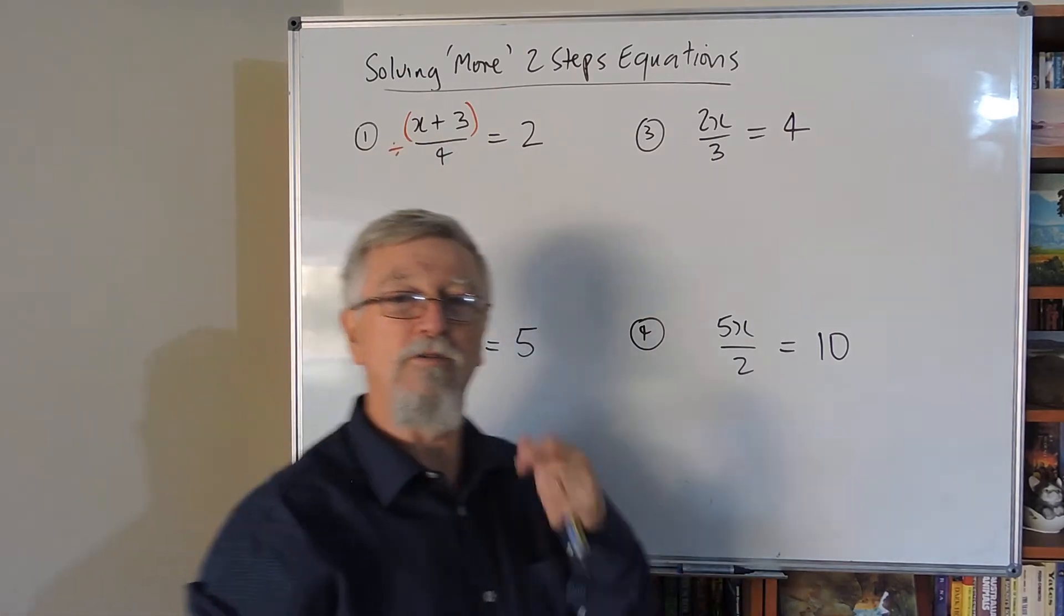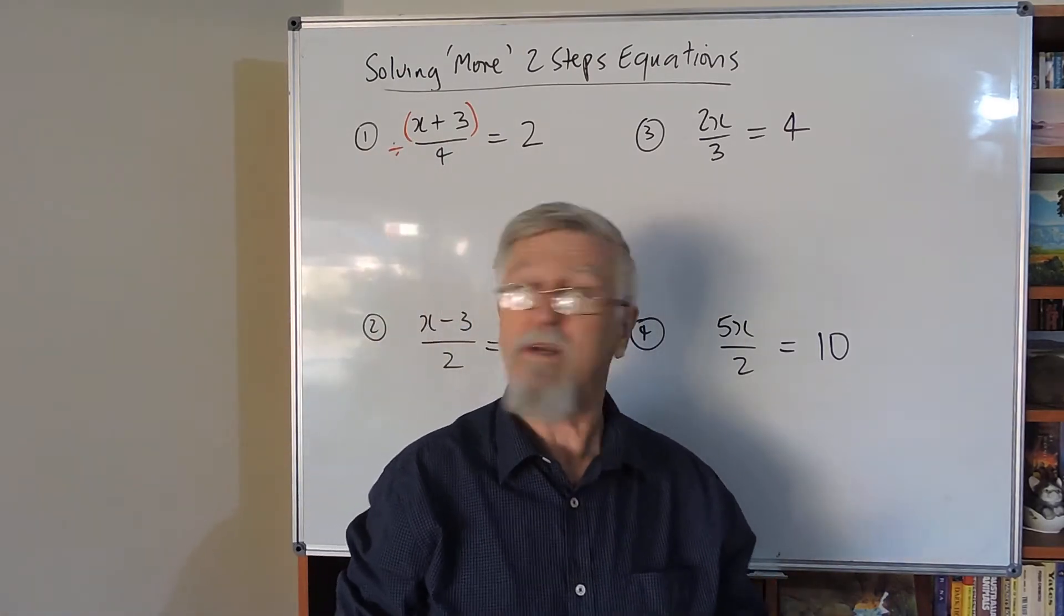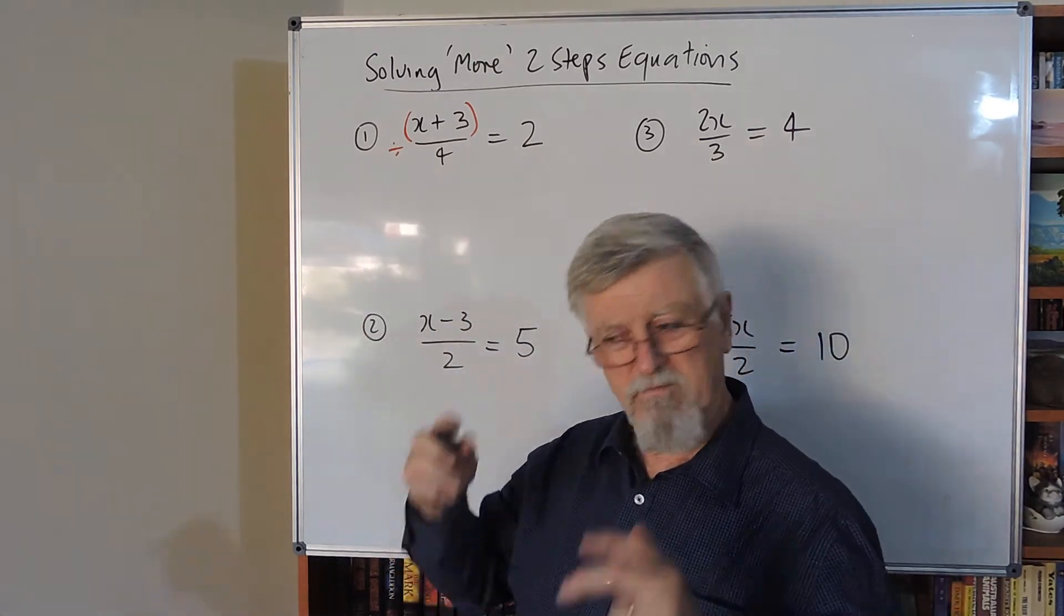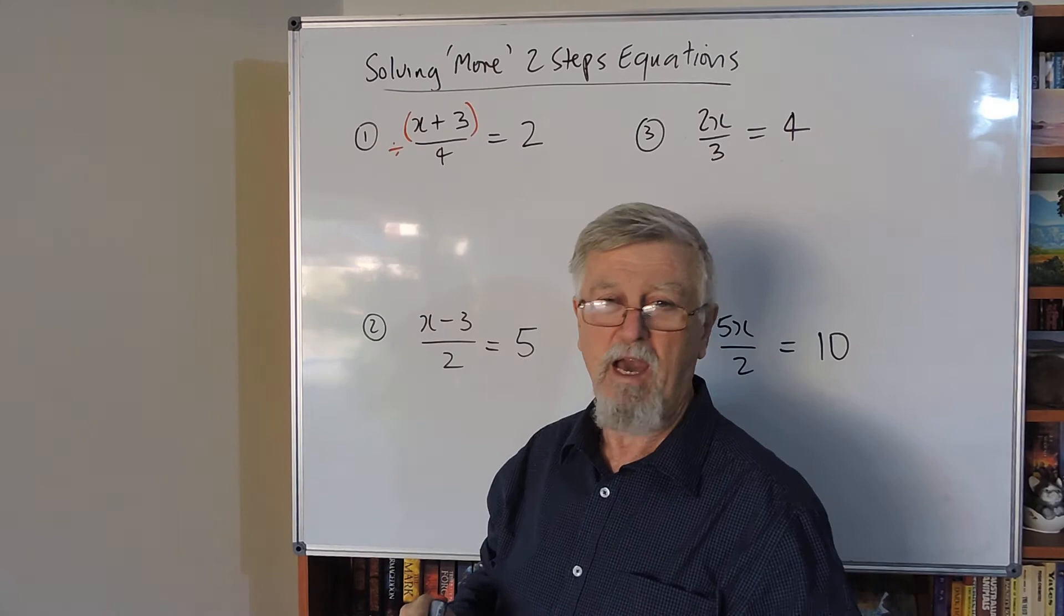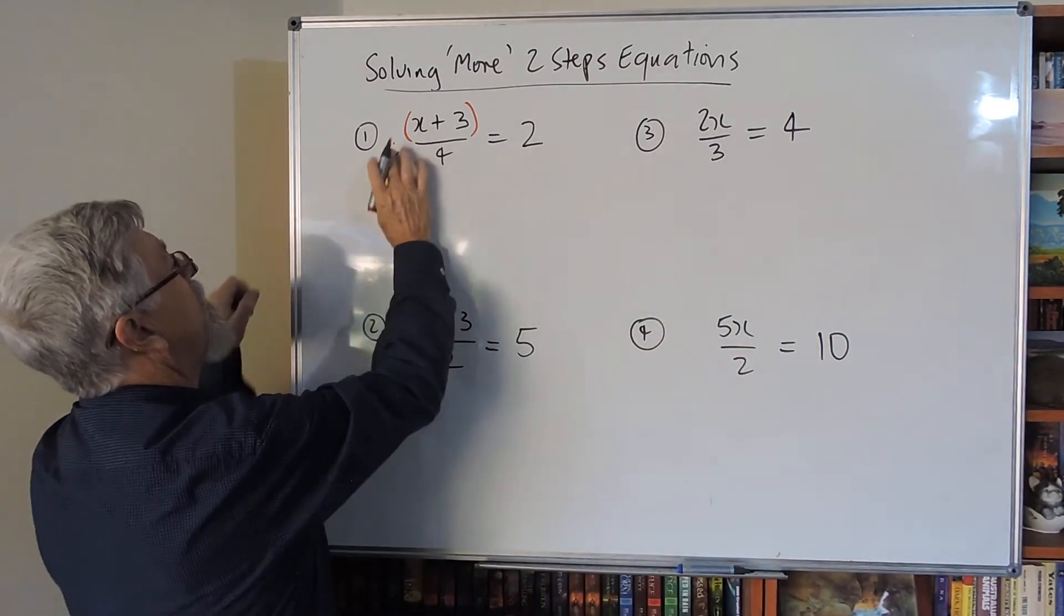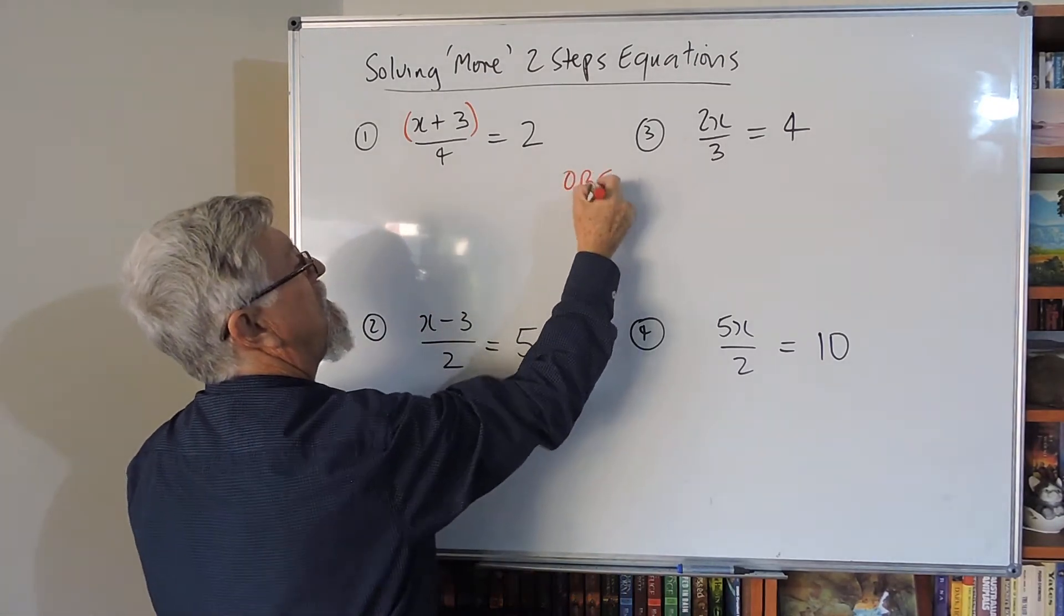Now this four here is controlled by that divide, so that little divide there controls the four, so I can move the four easier than I can move the three. A lot of people just get thinking 'oh, I can move the three' when you can't. Let's go back to this four here. How do I get rid of the divide by four? Talk about the opposites to both sides.